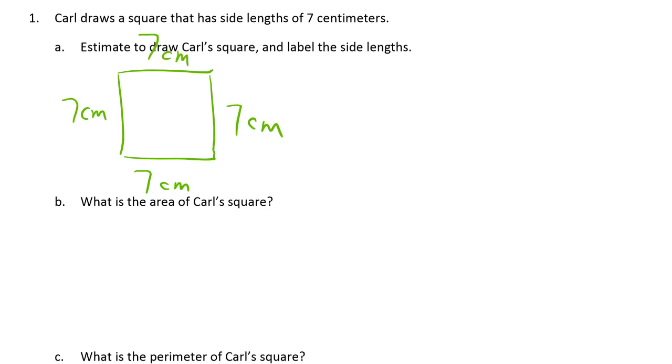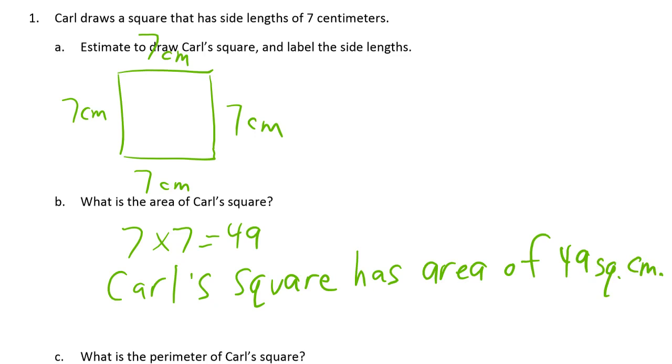What is the area of Carl's square? Okay, that's 7 times 7 which equals 49. It's the same square I just drew above so I'm not going to redraw it. Carl's square has area of 49 square centimeters. Don't forget the units please.